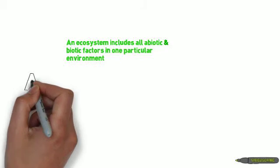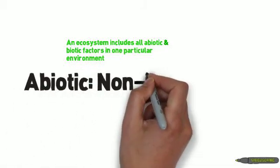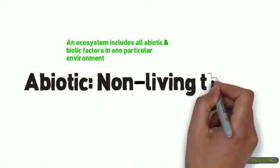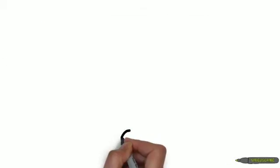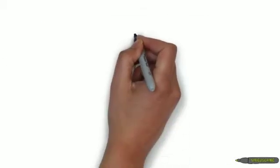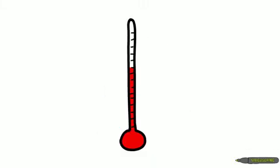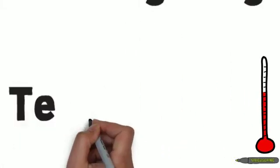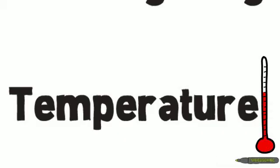Now that we've discussed biotic factors, let's discuss abiotic factors. The prefix 'a' in abiotic means not or without, so abiotic means non-living things. Living things are dependent on non-living things, like temperature — how cold or how hot it is. The weather and climate can affect organisms, and are examples of abiotic factors.